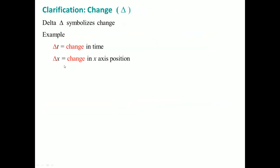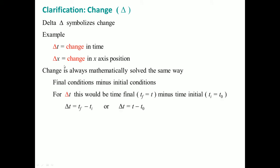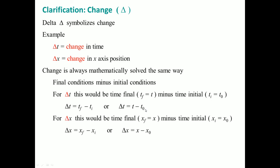The delta symbol means change. Delta T is your change in time. Delta X is the change in the X position. Change is always mathematically solved as final minus initial. So you might see it like this: T_F minus T_I, or T minus T-naught. For delta X, you could have it as X_F minus X_I, or X minus X-naught. These are your different ways of expressing change, and making sure you understand the different notations is important.